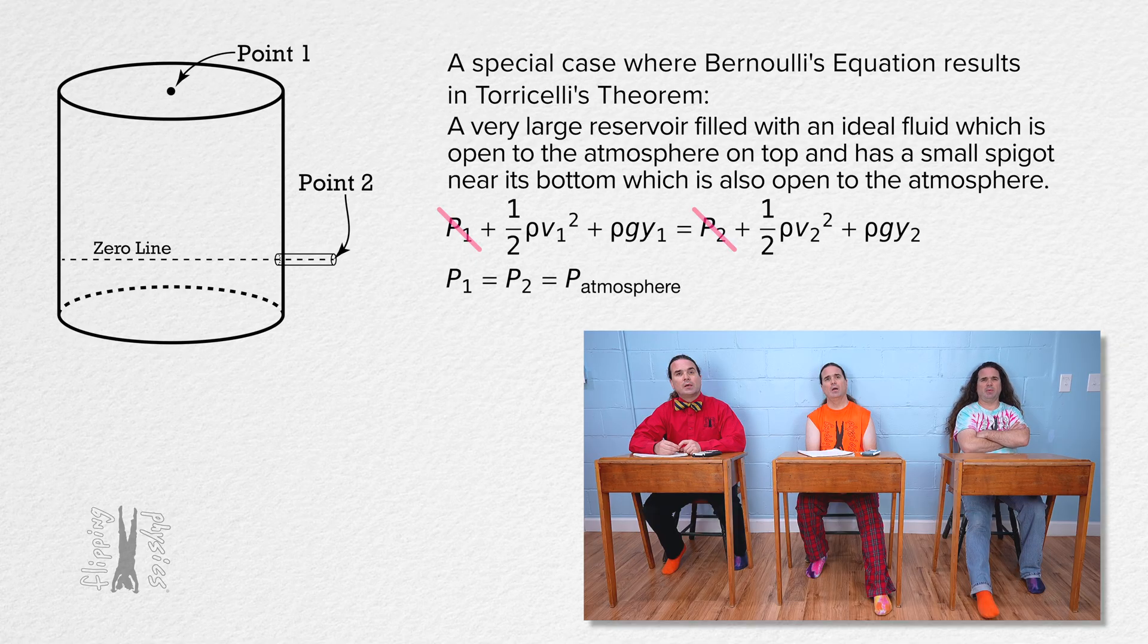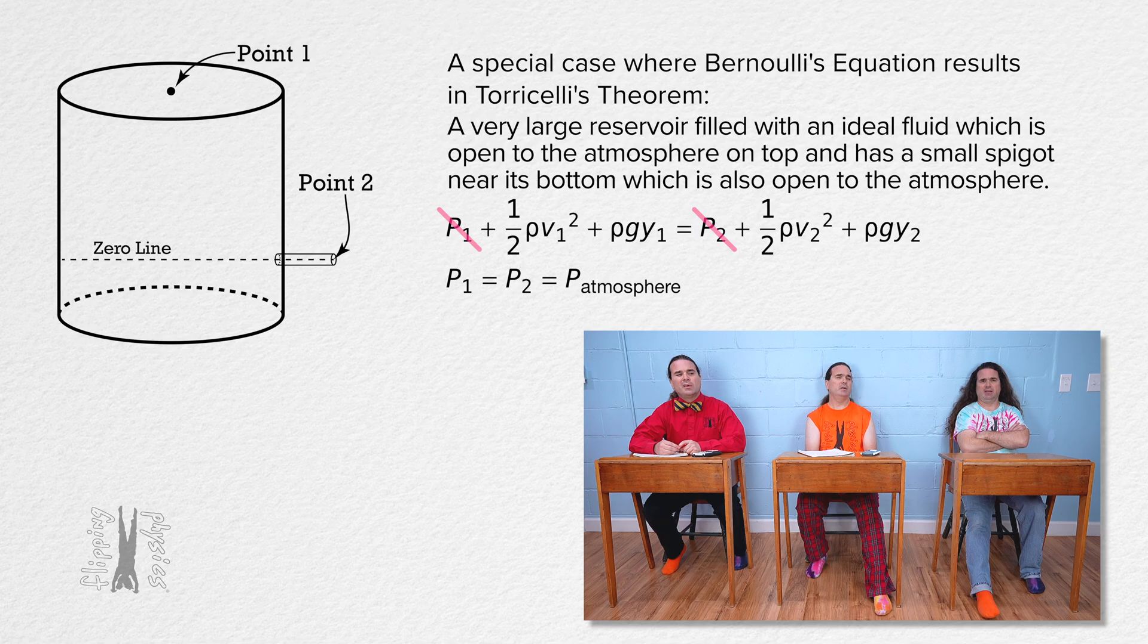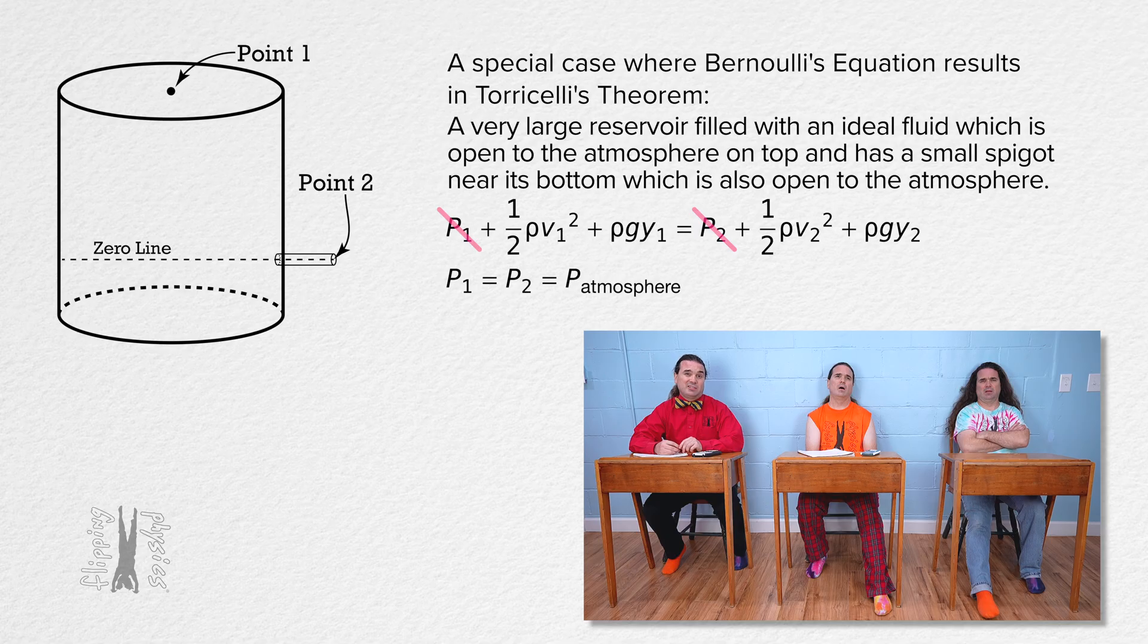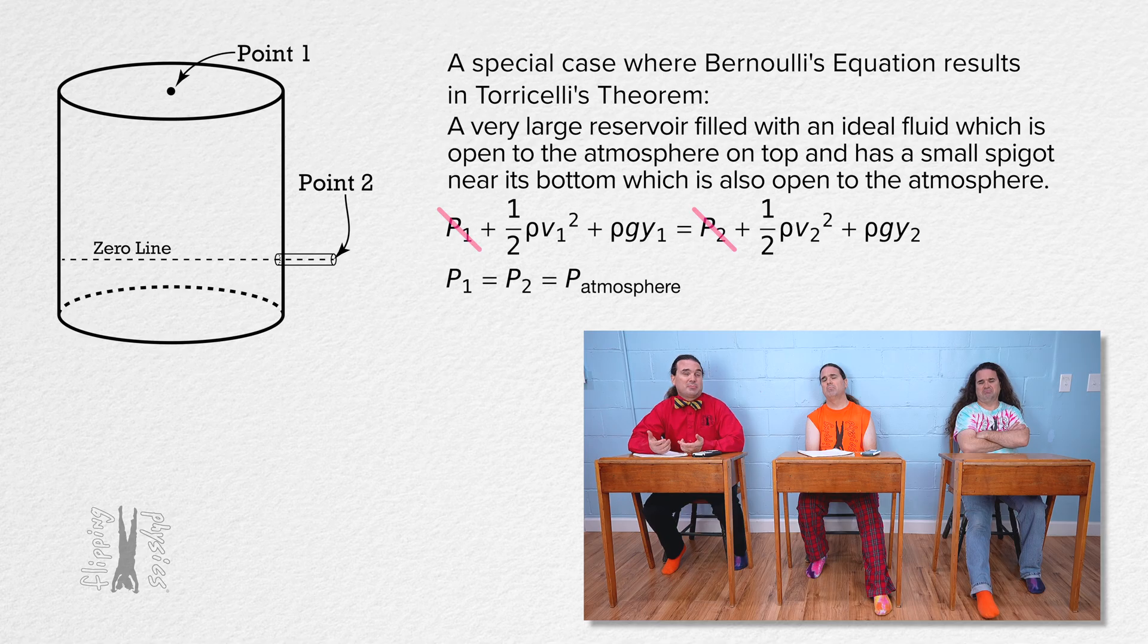Hold up. The spigot is lower than the top of the reservoir so the pressure is actually higher at the spigot, right? Yeah. The density of air is much much smaller than the density of water. So that difference in height causes a very small pressure difference which is negligible. Sure. Okay. Exactly, Billy. Thanks.